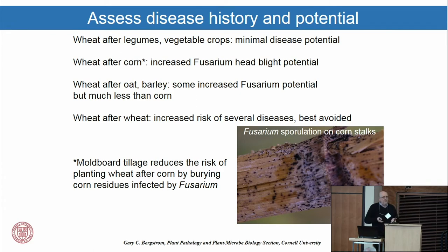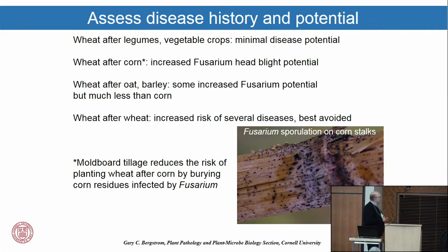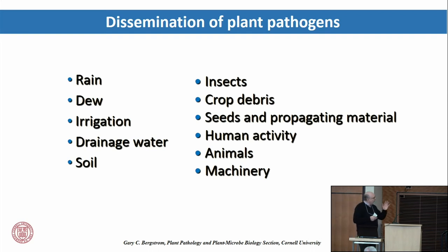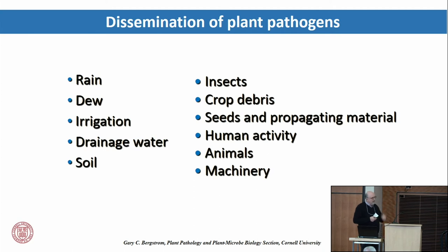We've often counseled not to plant wheat after corn because of the tremendous reservoir of Fusarium fungus — the producer of vomitoxin. There may not be a big risk for things like rust or mildew from planting wheat after wheat, but there's a lot of good reason not to do that. Pathogens disseminate in various ways: water plays a big role, as do insects and human activity. Machinery is a good way to move things around — some soil-borne viruses are very clearly moved when farm equipment moves from one location to another.